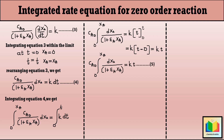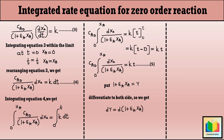Now let us solve the left side of the equation. For that, let us put 1 plus epsilon_A X_A equal to Y. Differentiating both sides, we get dY equals epsilon_A dX_A. From this we can write: dX_A equals dY divided by epsilon_A.